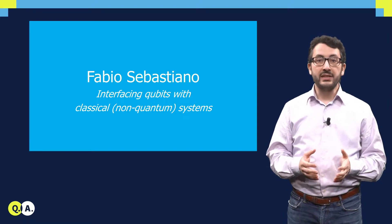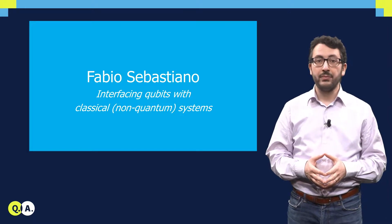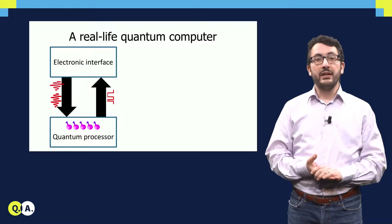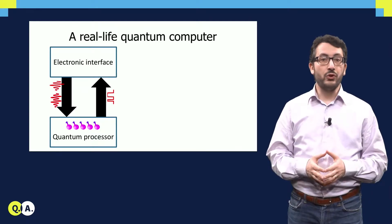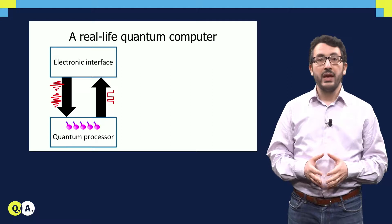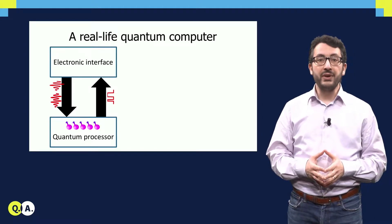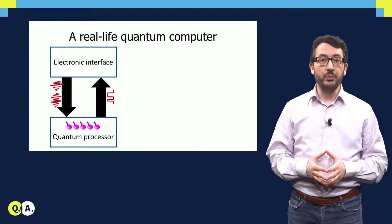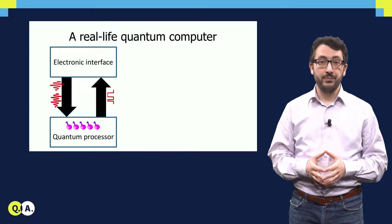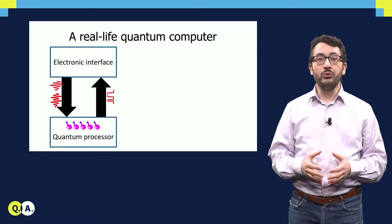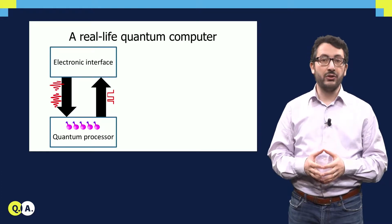In order to understand how we do it, let's look at how a real-life quantum computer looks like. Basically, there is the quantum processor where the qubits are, and you have seen implementation of qubits for a quantum processor in other videos. In order to control these qubits, you need an electronic interface to drive the operation of the qubits, for example single qubit or two qubit operations. At the same time, you also need to read out the state of the qubits, and this is done also by the electronic interface.